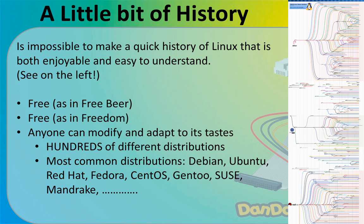About Linux, it is impossible to make a quick history because there are just too many distributions. All these lines you see represent every fork of Linux, because a guy named Linus Torvalds made this operating system that was free — free as in free beer, meaning you don't have to pay to use it, and also free as in freedom, meaning you can see how it is made, modify everything, create a new version, and distribute it with a new name. That is why there are hundreds of different distributions.